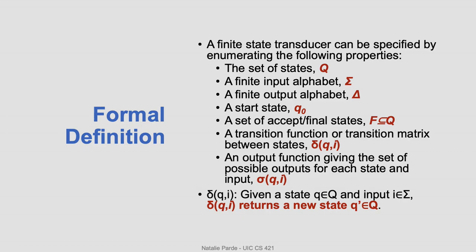The formal definition for finite state transducers looks pretty similar to the one for finite state automata. We still have a set of states Q, a start state Q0, final states F in Q, and a transition function delta. However, there are also a few changes. Instead of a single alphabet, with FSTs we have an input alphabet sigma and an output alphabet capital delta. We also have an output function lowercase sigma that returns a set of possible outputs for each state and input.